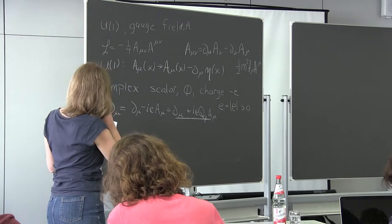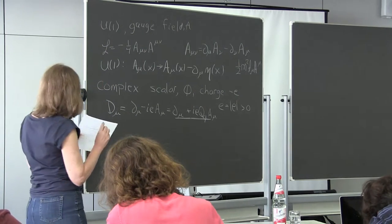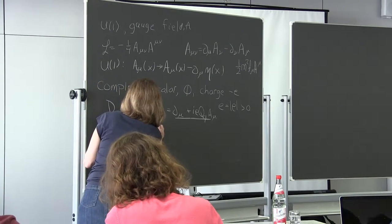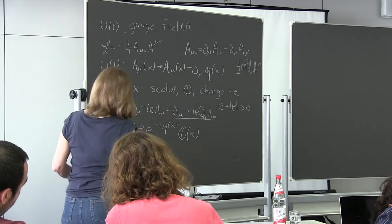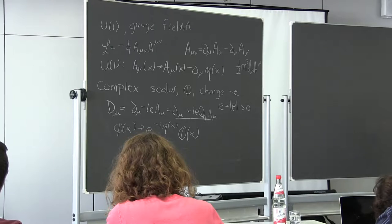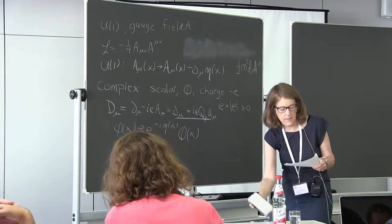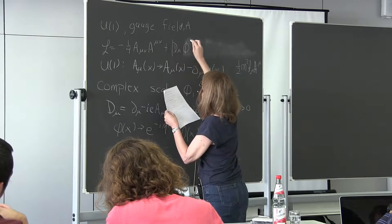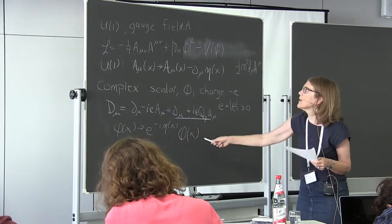The Lagrangian is invariant under φ(x) going to e^{−iΛθ(x)} φ(x). We write the Lagrangian as minus one-quarter F_μν F^μν plus |D_μ φ|² minus V(φ), where the covariant derivative is as defined. This seems like a really simple model.